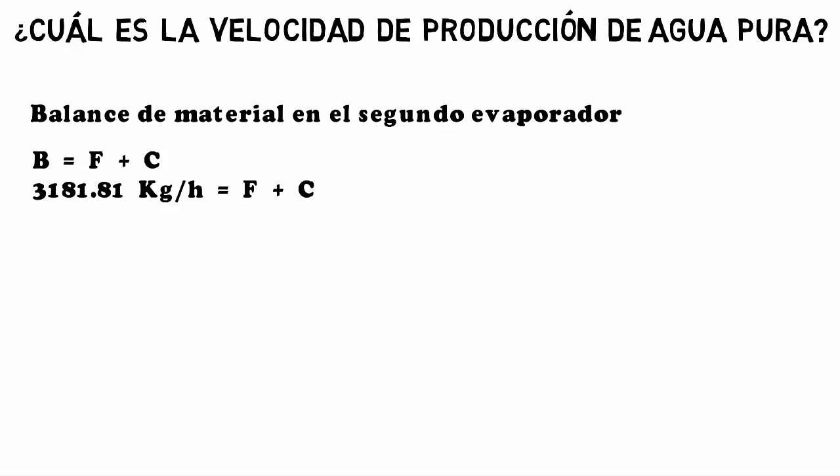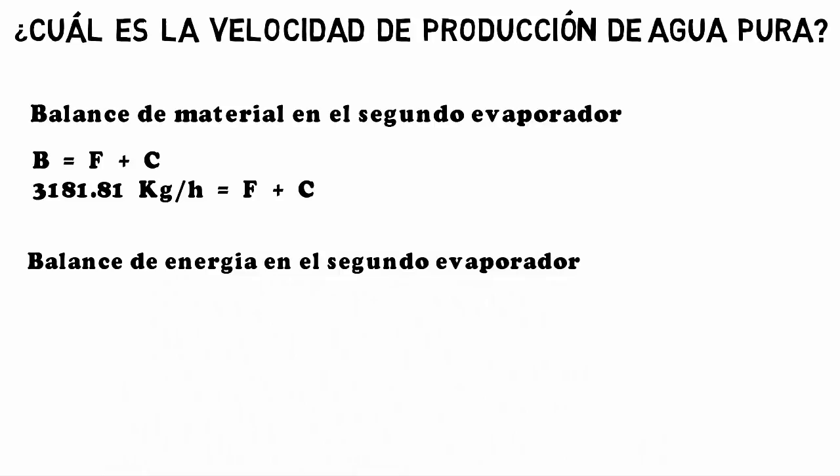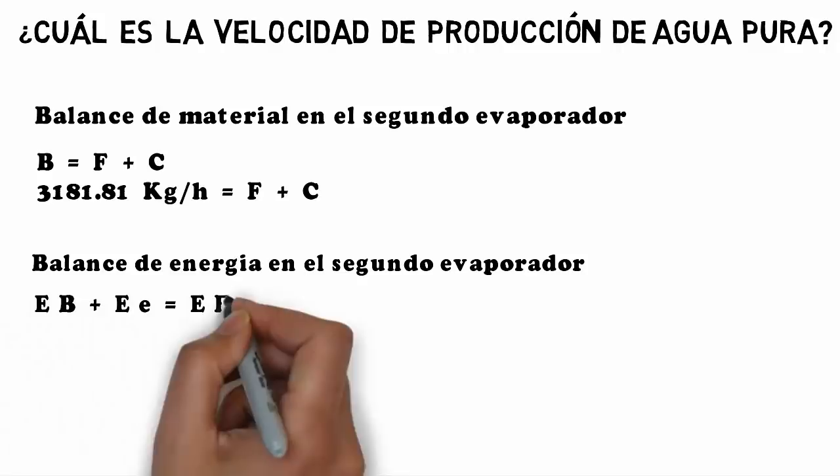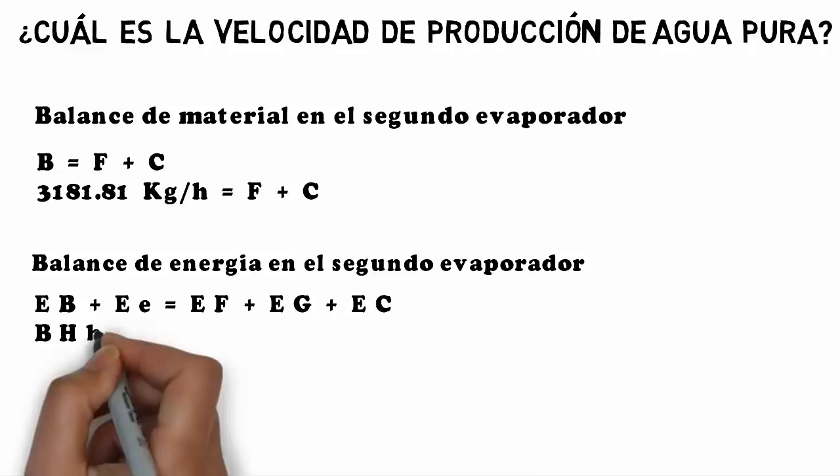3181.81 kg/h equals F plus C. Next, we perform an energy balance on the second evaporator, where the energy of B plus the energy of E equals the energy of F plus the energy of G plus the energy of C.